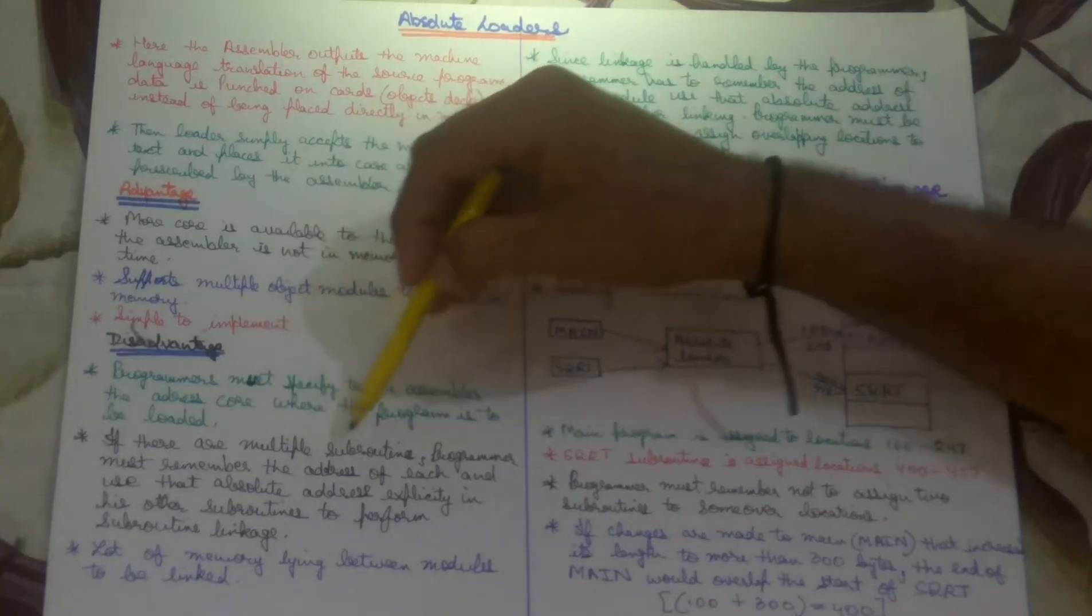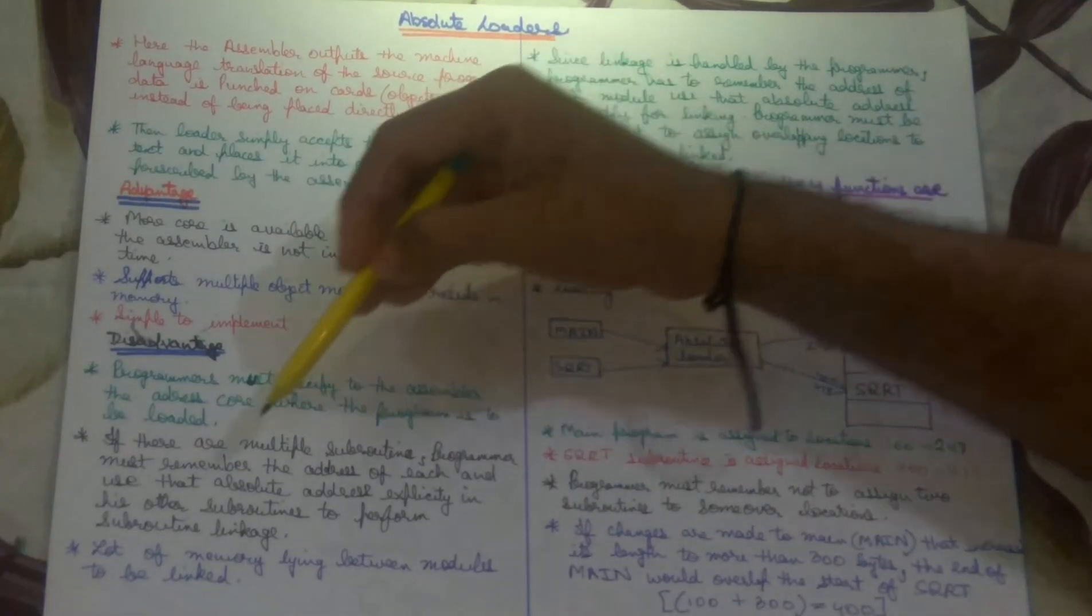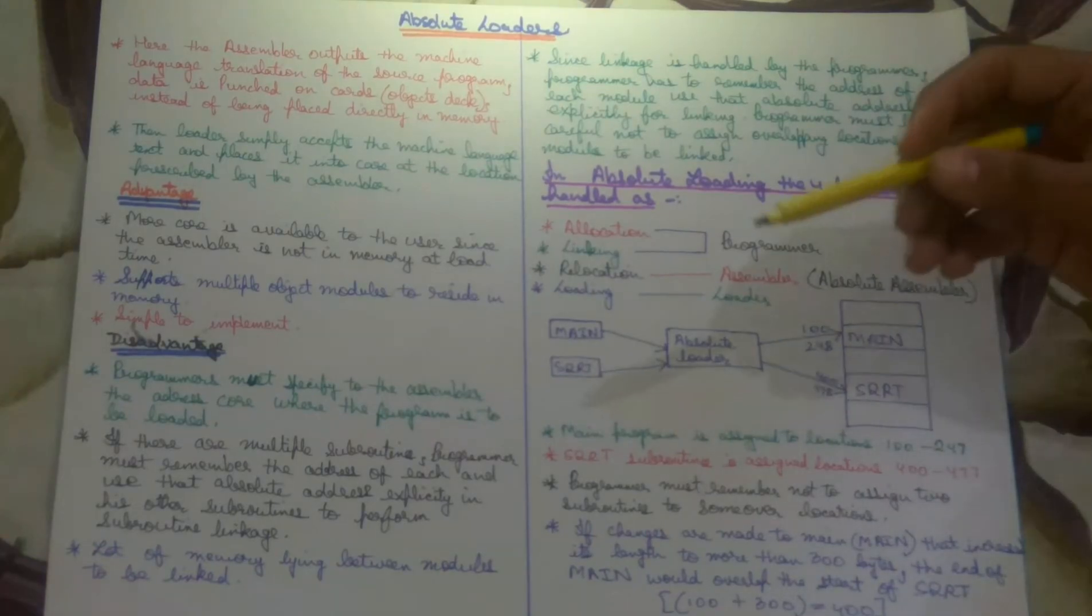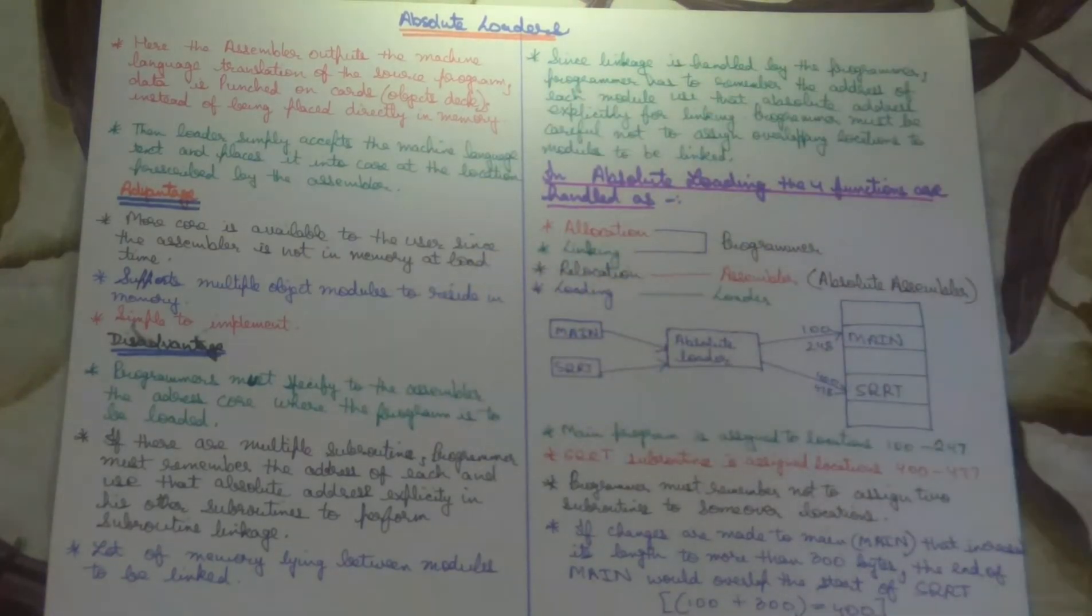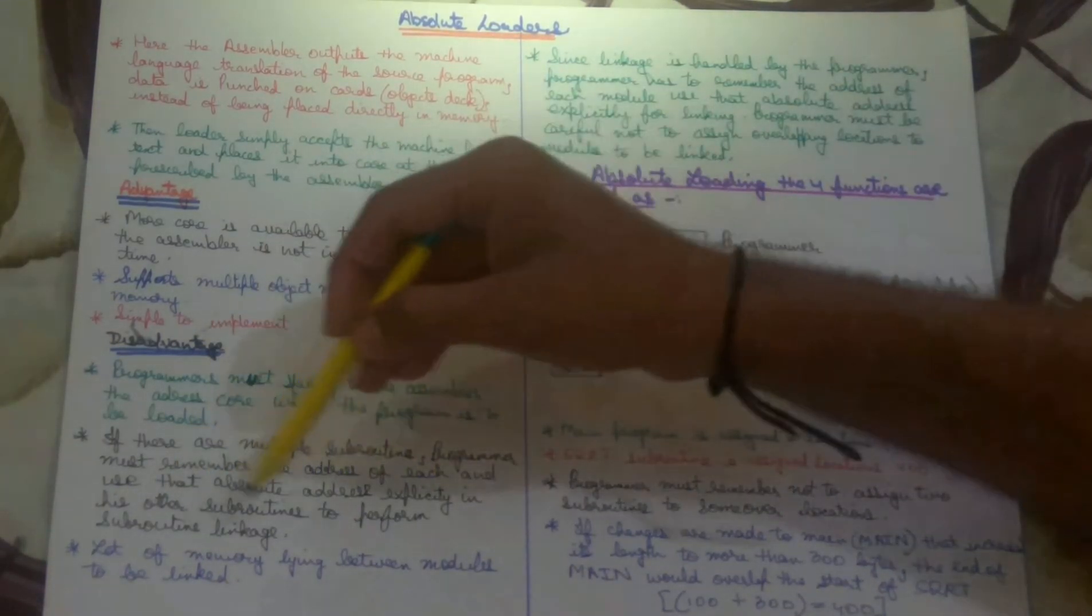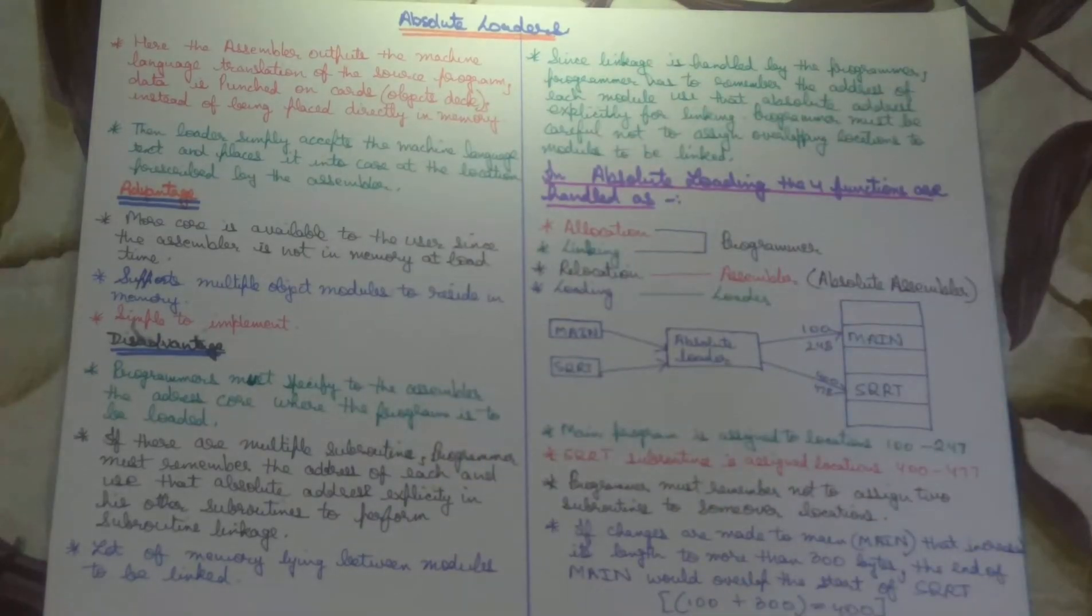If there are multiple subroutines, the programmer must remember each address. This is very difficult - to remember the addresses of all these subroutines. And use that absolute address explicitly in his other subroutines to perform subroutine linkages. Suppose I make a method, and inside that method I need to call another method. I have to remember the address of that second method.